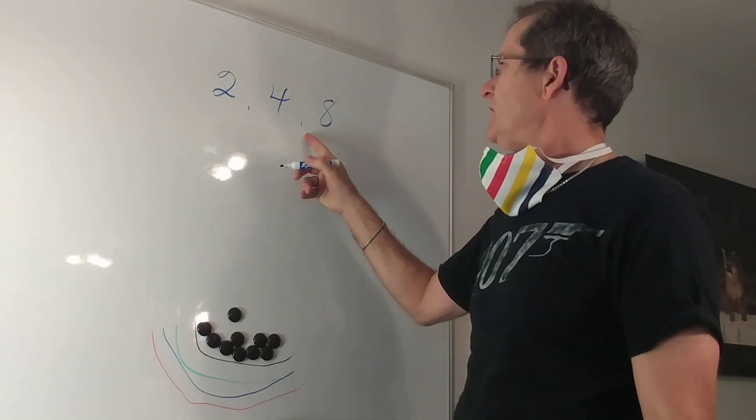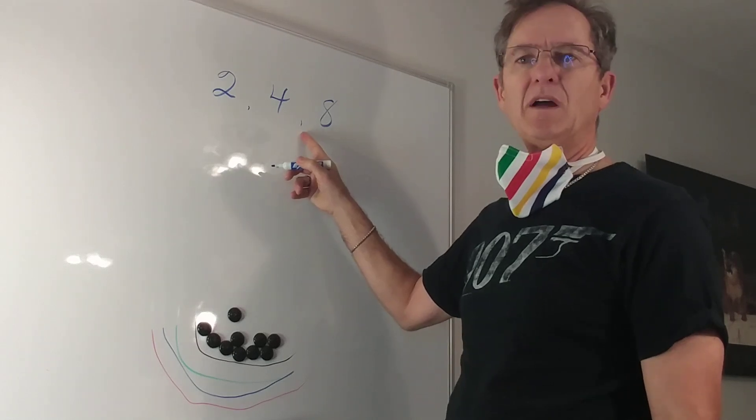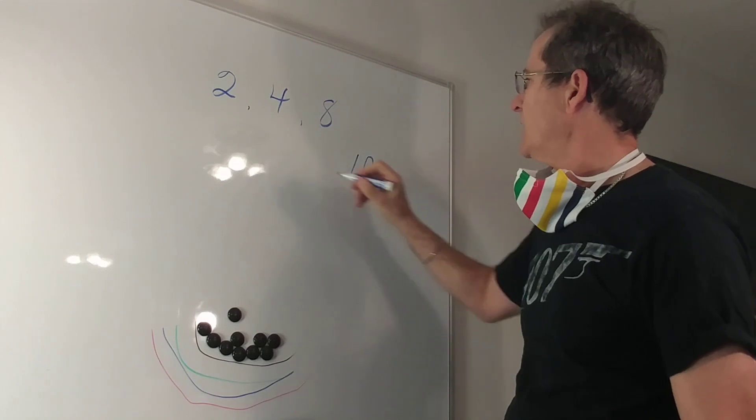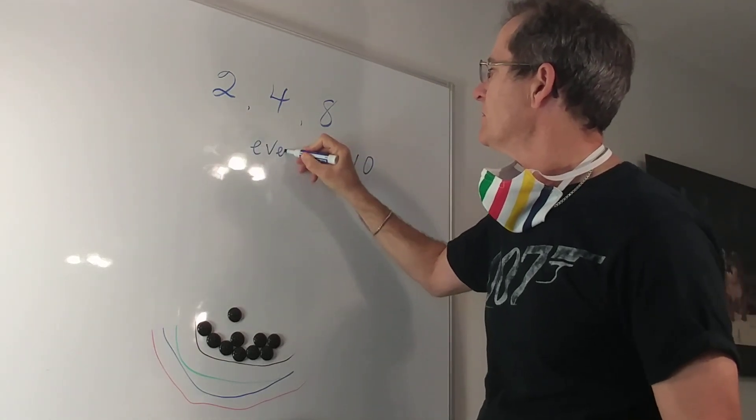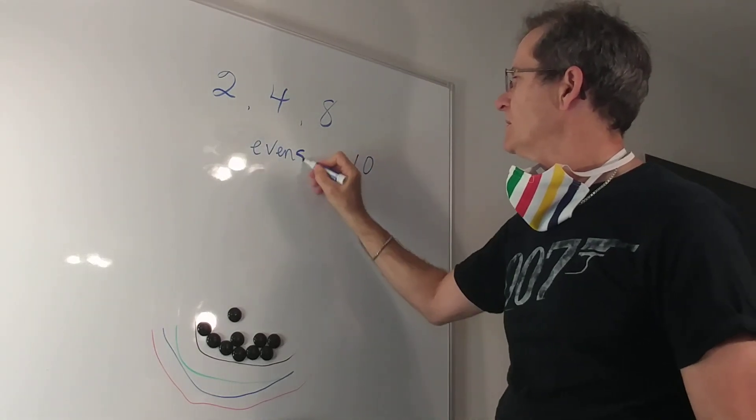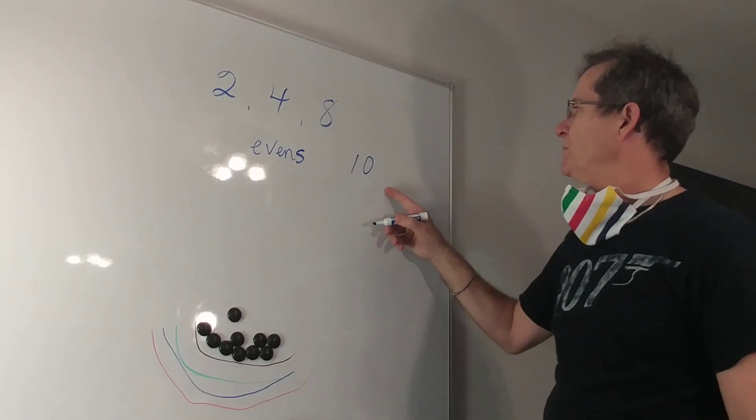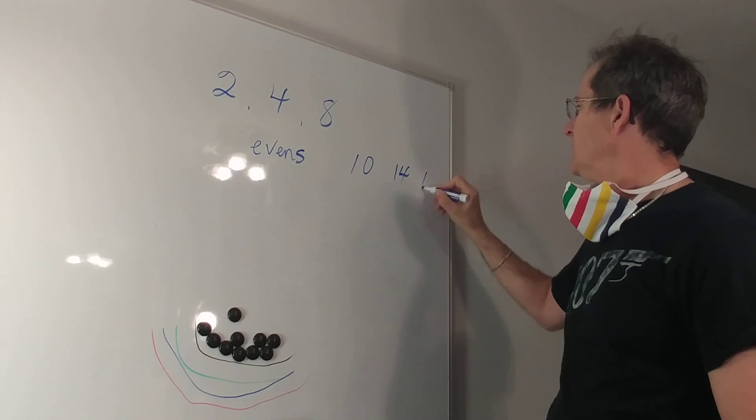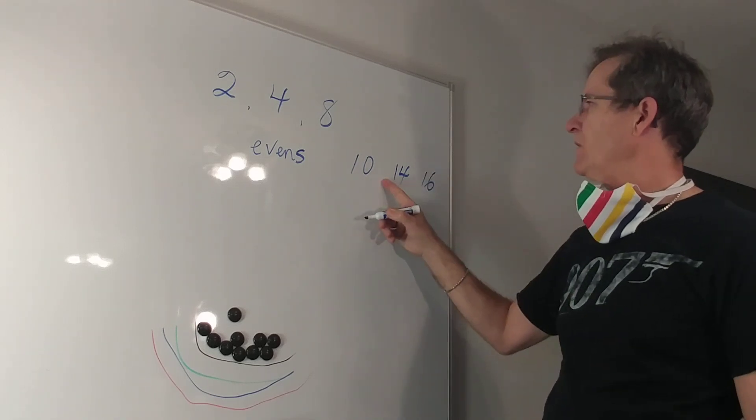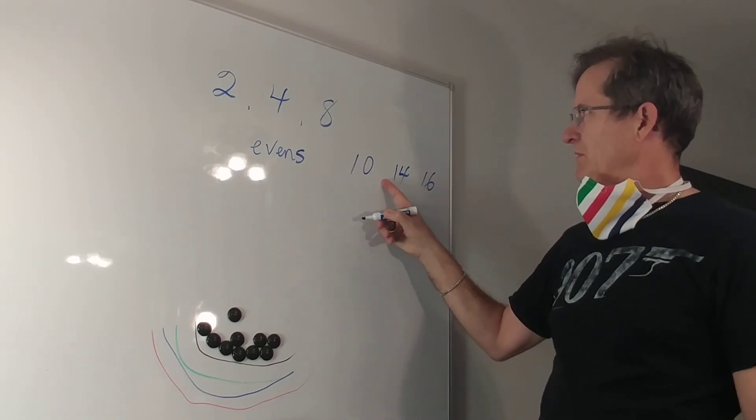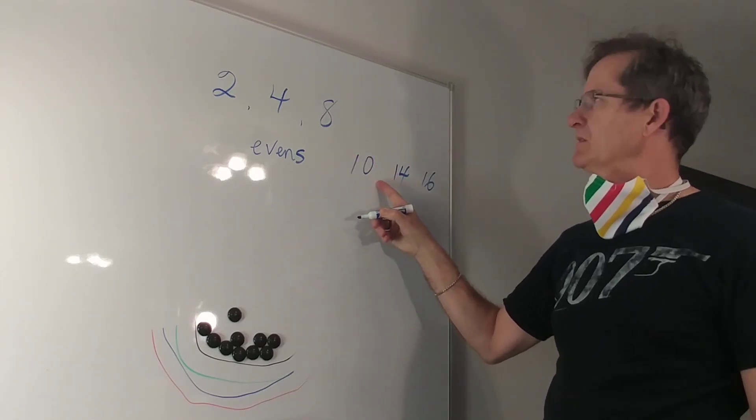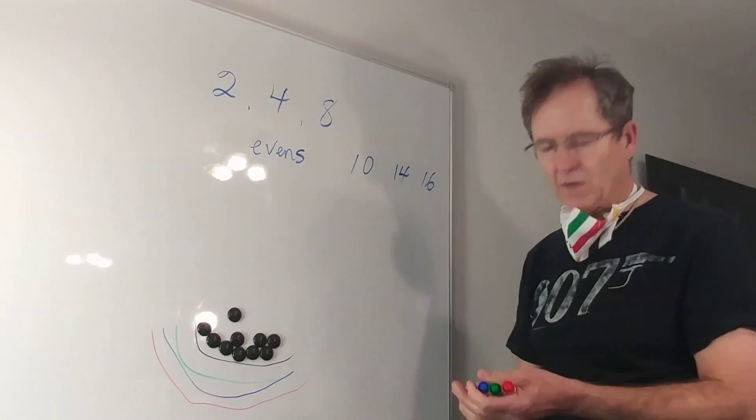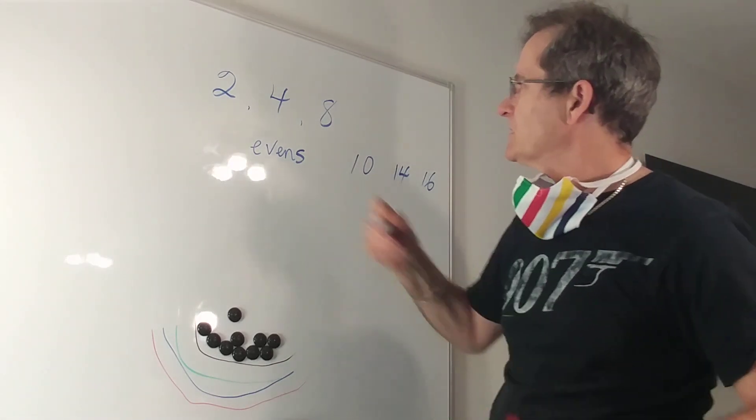So perhaps what they've done is left out every third even number. If that's the case the next number would be 10, and the one after that would be 14, and then 16. You leave out 12 because it's the third one after these two, or it's divisible by six. That's one way to look at it.